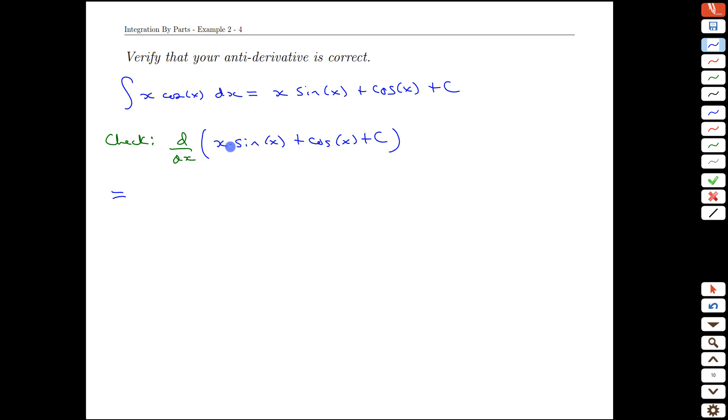What does that equal? Well, we have a product rule first. So we'll have the derivative of the first times the second plus the first times the derivative of sine, which is cos, plus the derivative of cos by itself, which is negative sine, and plus c's derivative is zero. And what do we see right out of the gate? We have a positive sine of x and negative sine of x that cancel. And so we are back to simply x cos of x. That matches our original integrand. And so we have the correct antiderivative.